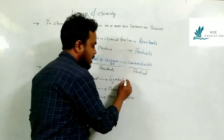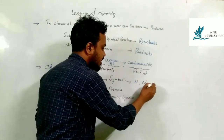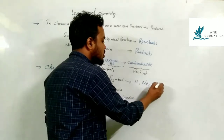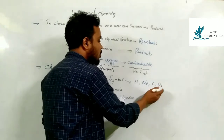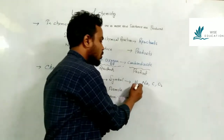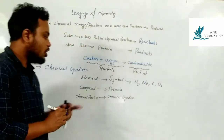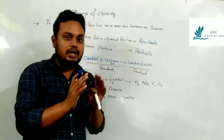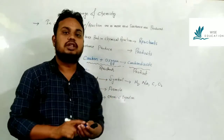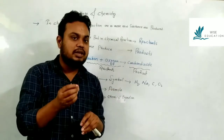For example, elements like hydrogen, sodium, carbon, oxygen, O2, chlorine, and iron — these elements form symbols. Elements combine to form molecules.